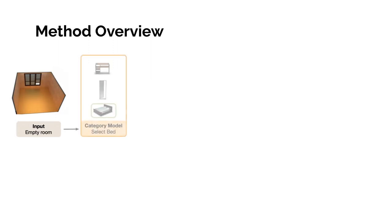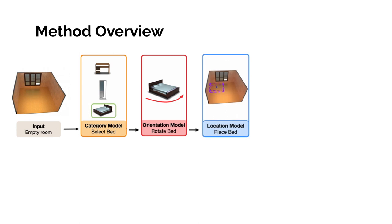For each object, we predict its class category, orientation, location in the scene, and size. From these object properties, we select a CAD model from the database.